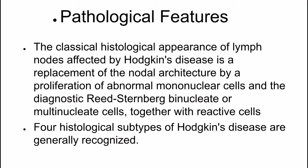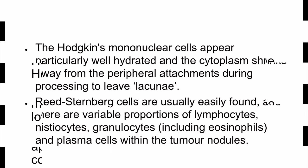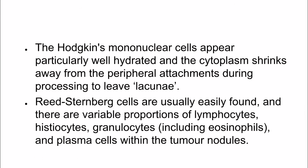Four histological subtypes of Hodgkin's disease are generally recognized. The first is nodular sclerosing, which accounts for about 40% of all Hodgkin's disease and 70% of all Hodgkin's cases in adolescence. This is the only form more prevalent in women. It can involve the lower cervical lymph nodes. The lymph node has a striking nodular appearance due to bands of collagenous connective tissue. The Hodgkin's mononuclear cells appear well hydrated and the cytoplasm shrinks away during processing to leave lacunae. Reed-Sternberg cells are usually easily found, with variable proportions of lymphocytes, histiocytes, granulocytes including eosinophils, and plasma cells within the tumor nodules.